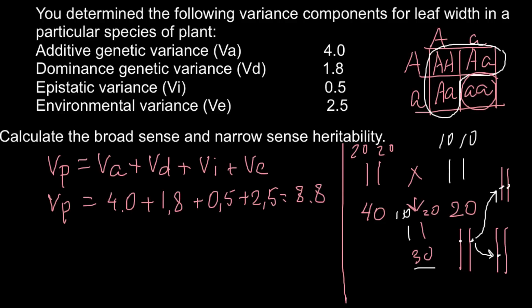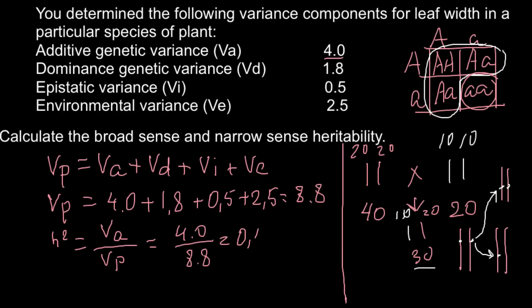Now we can calculate narrow sense and broad sense heritability. Narrow sense heritability is h-small-squared, and we divide the additive variance VA by total phenotypic variance VP. Additive variance here is 4.0, divided by 8.8, and the answer is 0.45. So I just took additive genetic variance and divided by total phenotypic variance.